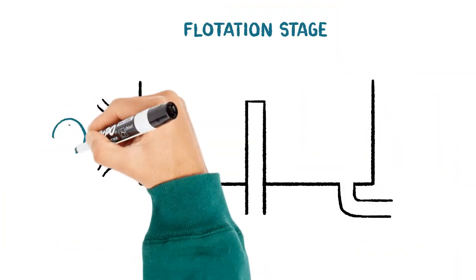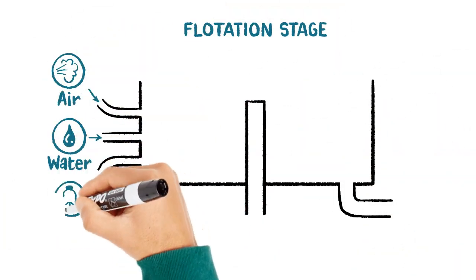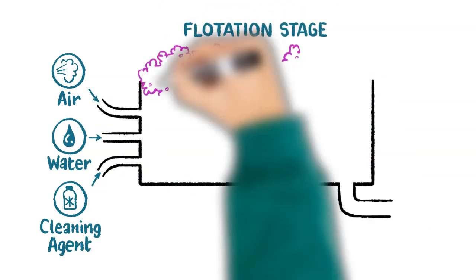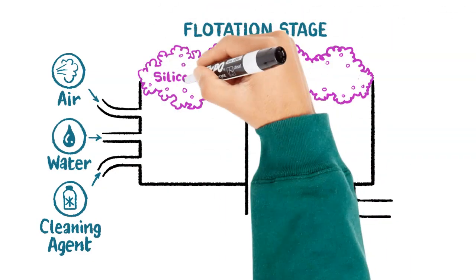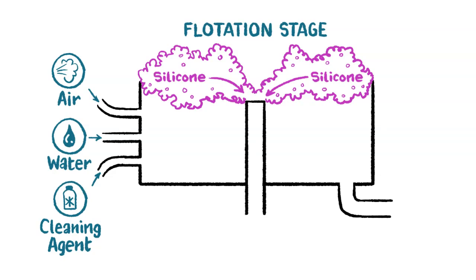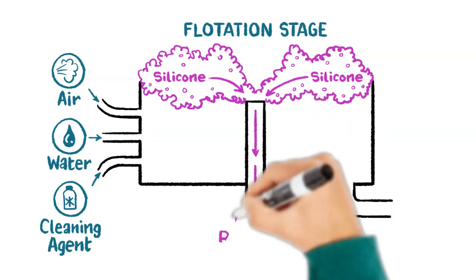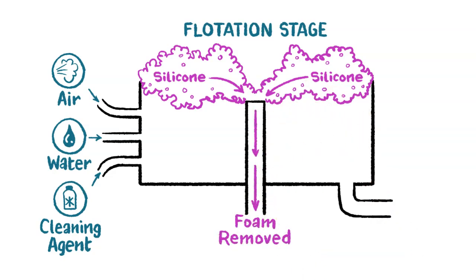To remove the silicon coating, the pulp is mixed with water, air and cleaning agents to create a foam that holds the silicon particles. This foam, now holding these particles, is removed through a central hole, while the paper fibers move down and are pumped away.